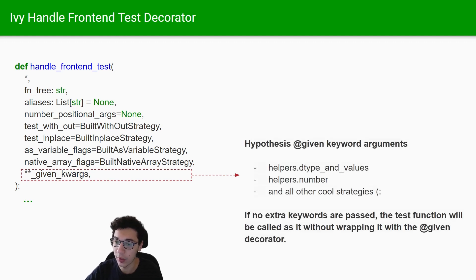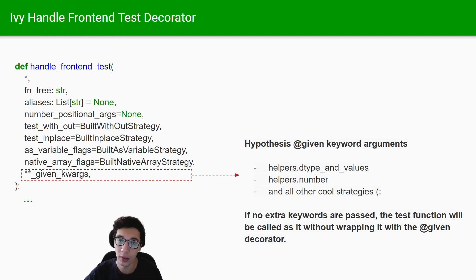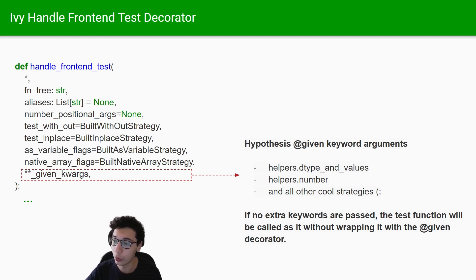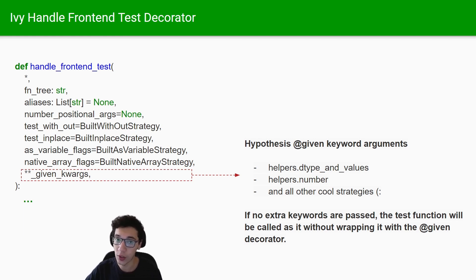The last argument is the given_keywords, which refers to the arguments we want to pass down the tree to the hypothesis given decorator. These must always be a search strategy - it could be one of the strategies like helpers dtype_and_values, your own custom strategy, or even a hypothesis strategy.